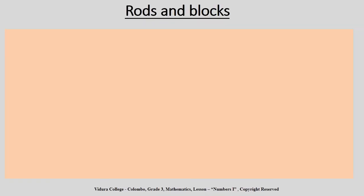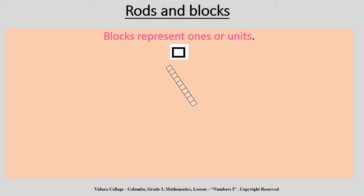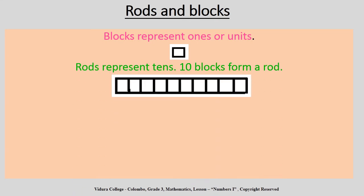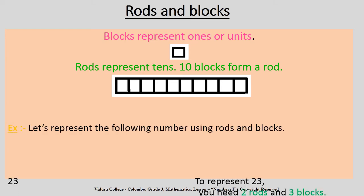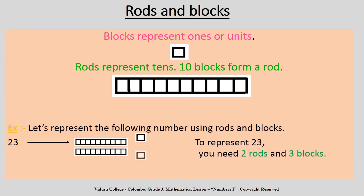Rods and Blocks. Children, rods and blocks are used to represent numbers. Blocks represent ones or units, and we represent blocks by drawing a square. Rods represent tens, and ten blocks form a rod. Exercise 4: Represent the following numbers using rods and blocks — 45, 56, 30.